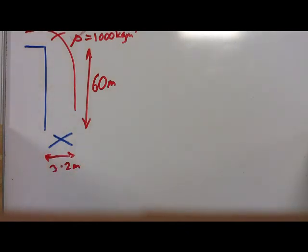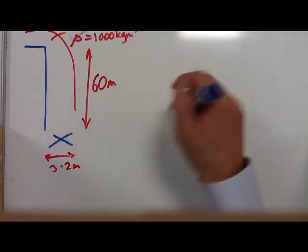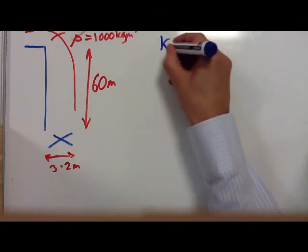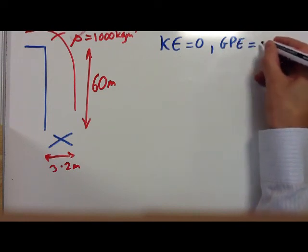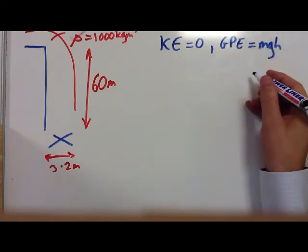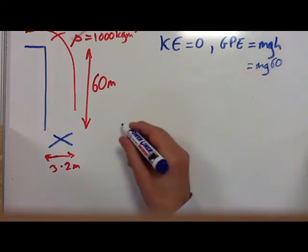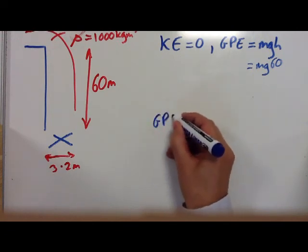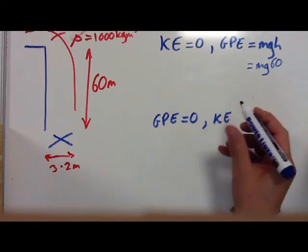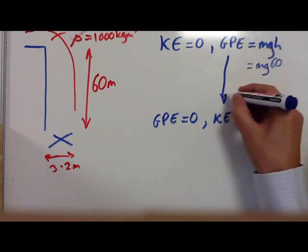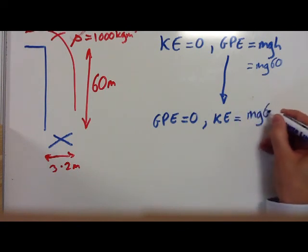The first question is: what is the maximum speed of the water as it hits the turbine? Well, as soon as we're given height it gives us a clue that we're talking about GPE — it's an energy problem. Kinetic energy at the top equals zero. We know GPE equals MGH, where H is 60. At the bottom we assume GPE is now zero and all that GPE has been transferred into kinetic energy, so KE equals MGH times 60.